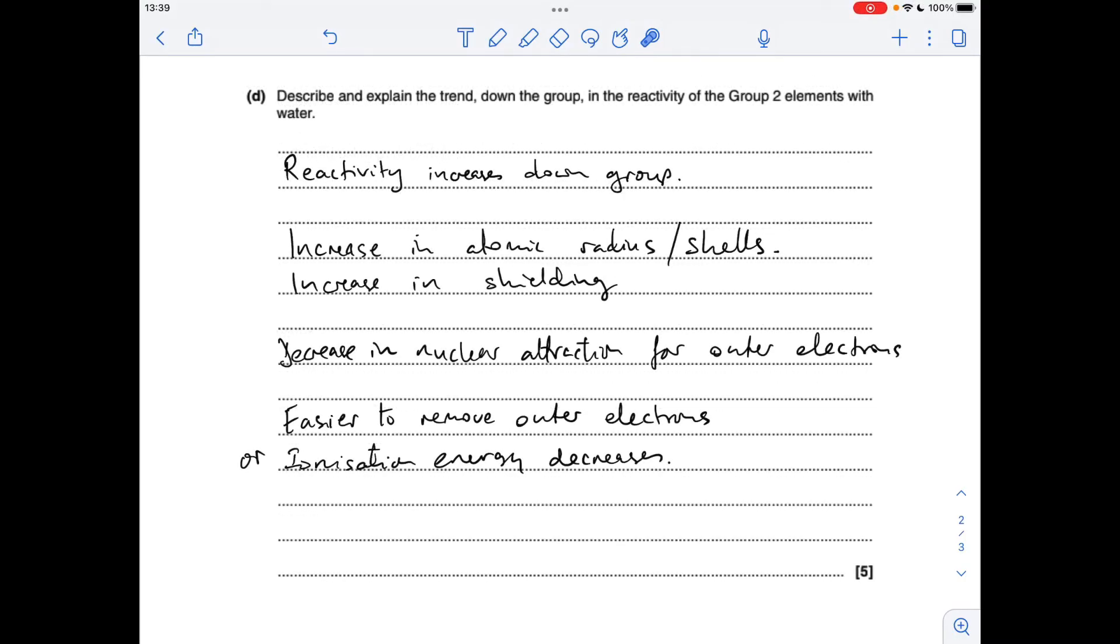And finally, part D, describe and explain the trend down the group in the reactivity of group two elements with water. It could be reacting with anything. So the trend is that they get more reactive as you go down the group. So we need to say something around atomic radius or shells. So they both increase. That means the shielding increases. Therefore, there's a decrease in the nuclear attraction for the outer electrons. Remember, when group two elements react, they are giving away their valence electrons, their two valence electrons. So we just need to qualify that by saying it's easier to remove the outer electrons, or you could talk about the ionization energy decreasing as you go down the group.